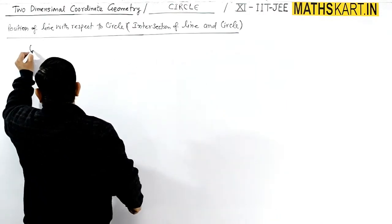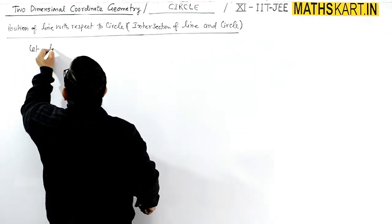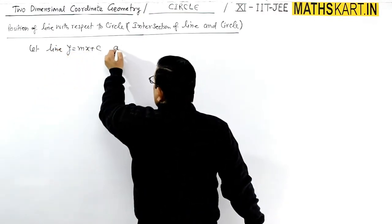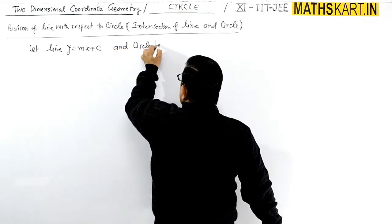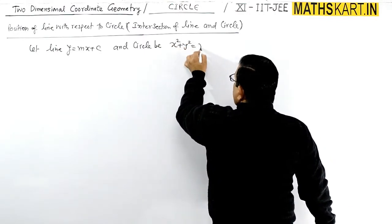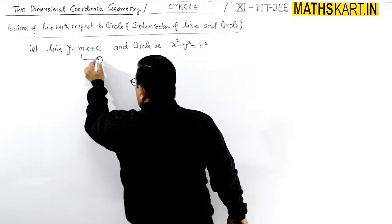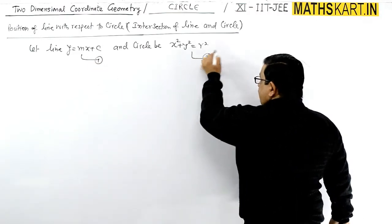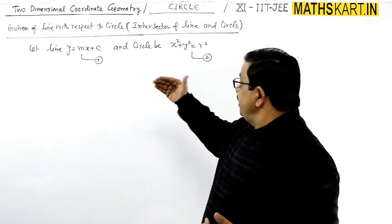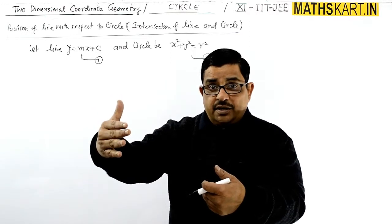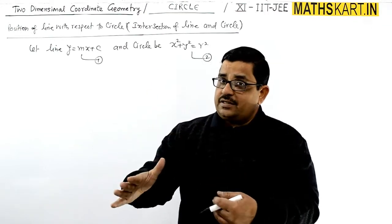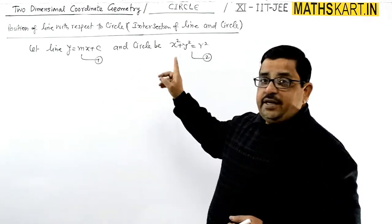Let the line be y = mx + c, and let the circle be the basic circle x² + y² = r². So this is the line equation and this is the circle equation. The point is that the line remains far away — not intersecting, not touching — or it touches the circle, or it intersects the circle.